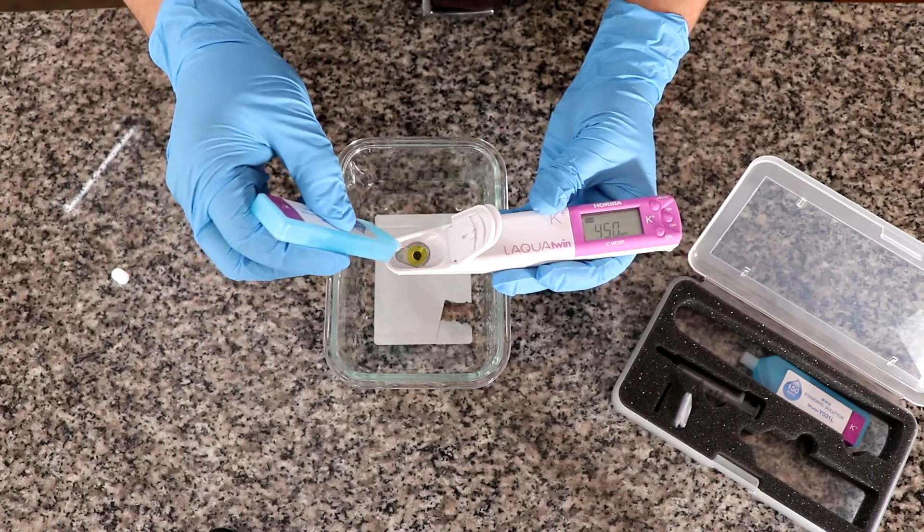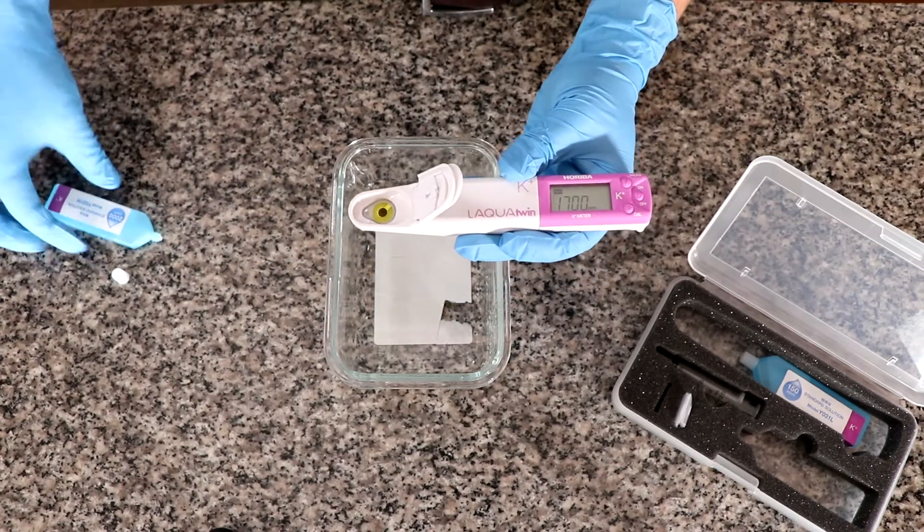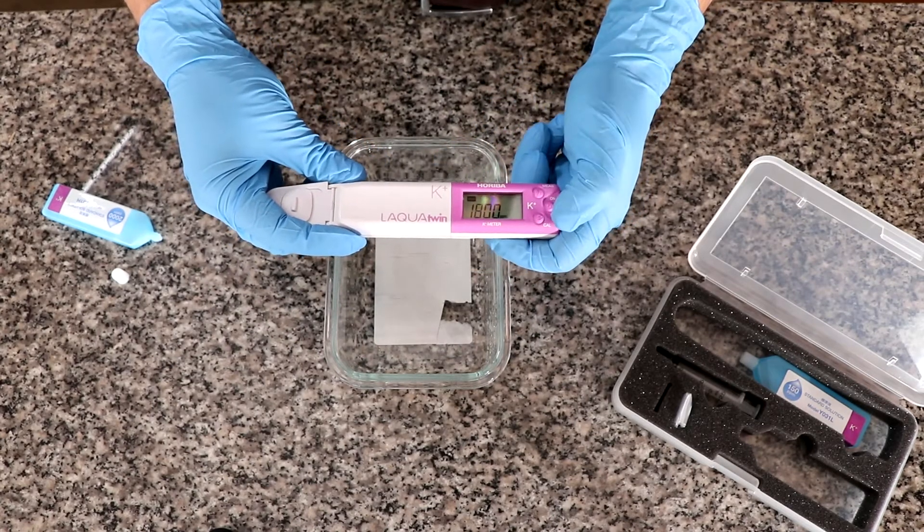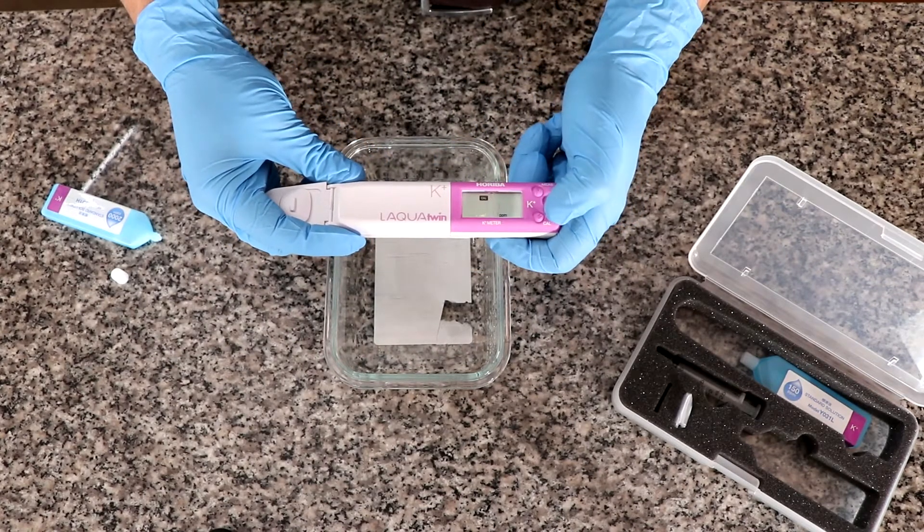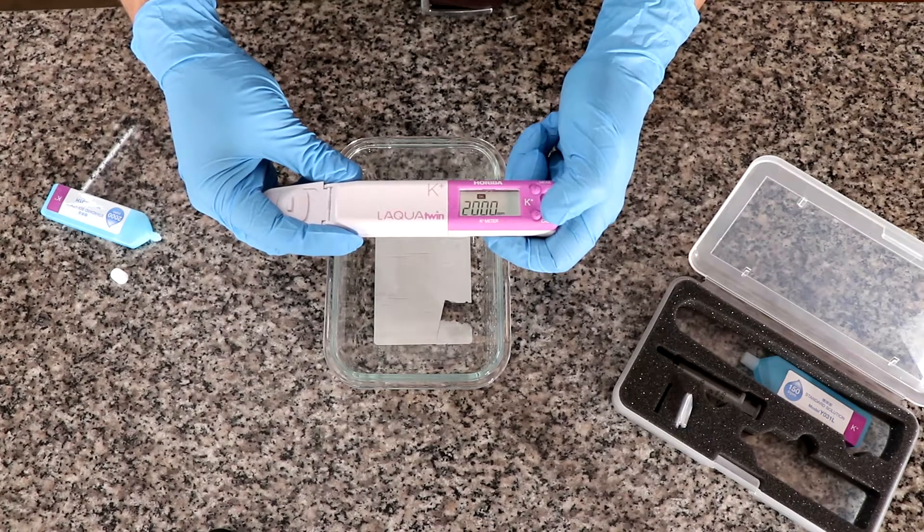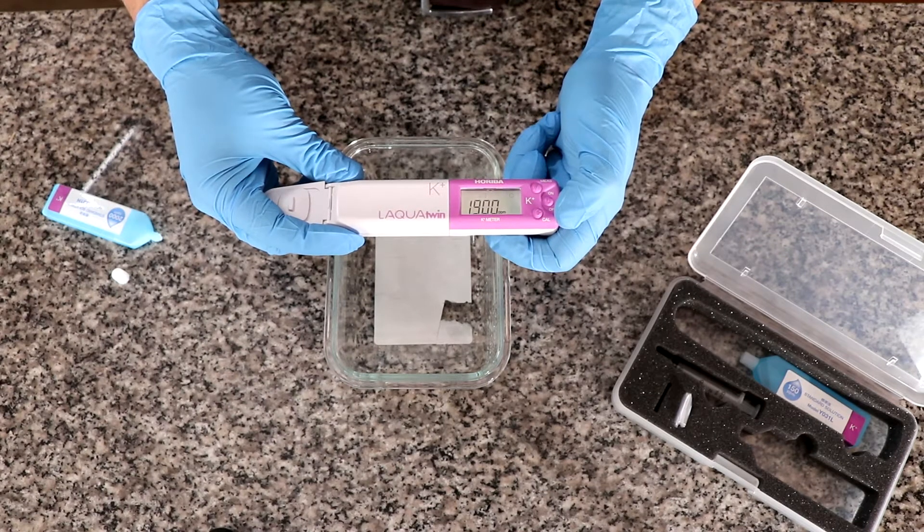And then for the last one I am going to fully cover the electrode assembly. Make sure there's no bubbles. I'm going to cover this and I hit calibrate. It's at 2000, hit calibrate, and now it should change to 2000.